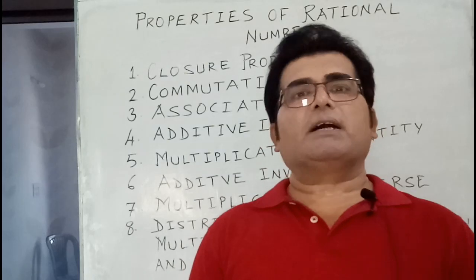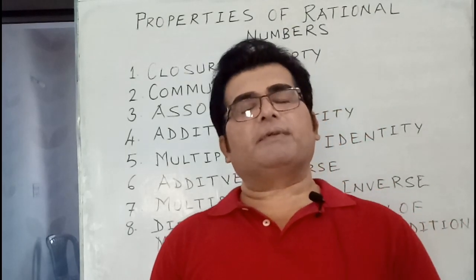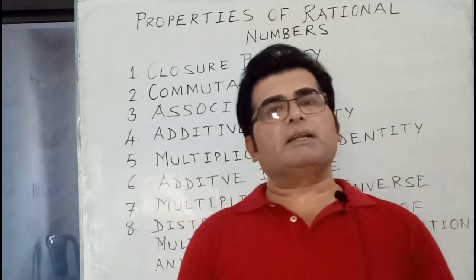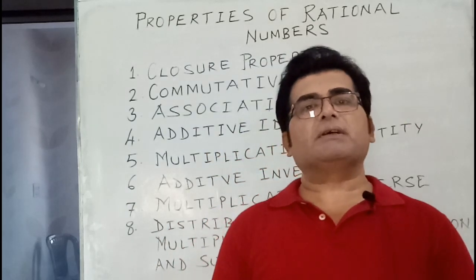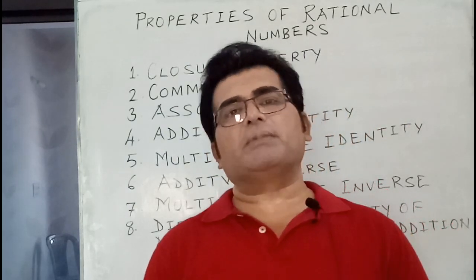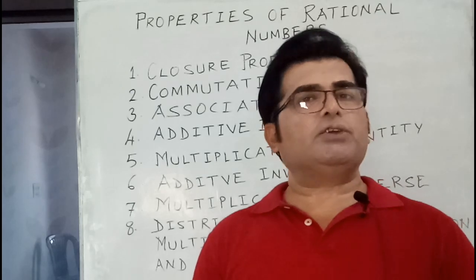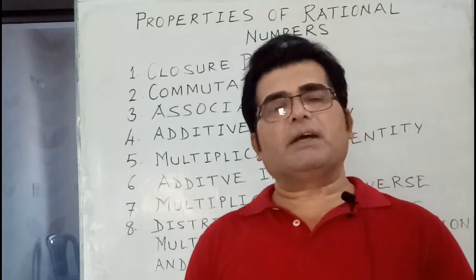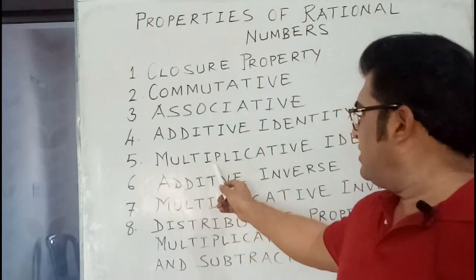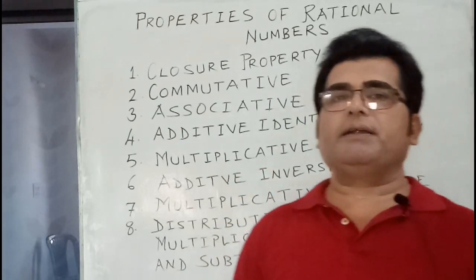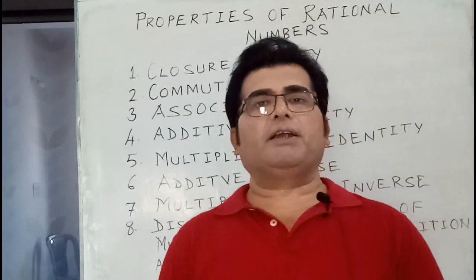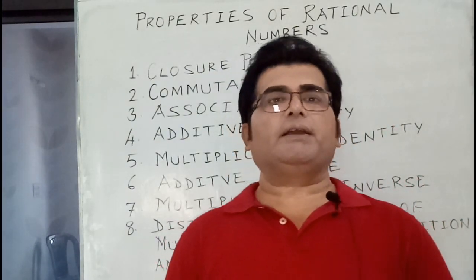Zero is the additive identity of rational numbers. If you add zero to any rational number, you get the same rational number. For example, one-half plus zero equals one-half. Then the multiplicative identity: number one is the multiplicative identity of rational numbers.